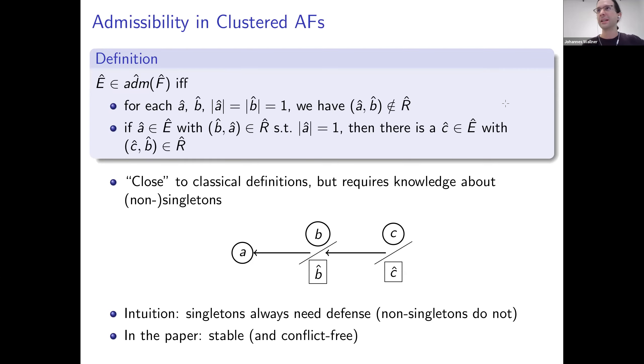And I will give you one definition. So there are actually several definitions that achieve this property of abstracting. But I will give you one. Here on the top, in a sense, as usual in classical admissible sets, we have a conflict-free part and we have a defense part. So it turns out that what's important for the abstract admissible sets is whether something is a singleton cluster, so this is denoted here like this, so this means the cluster contains only one argument, they are still concrete, or whether they are not singleton clusters.